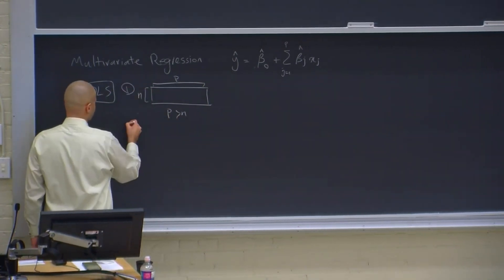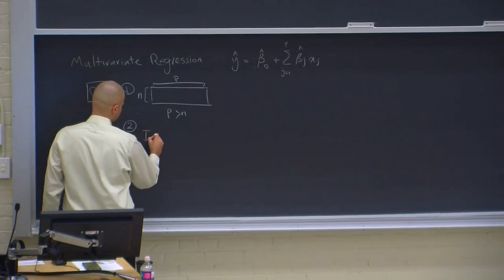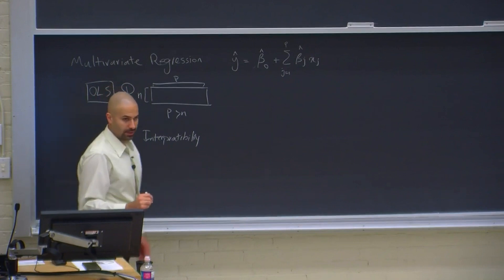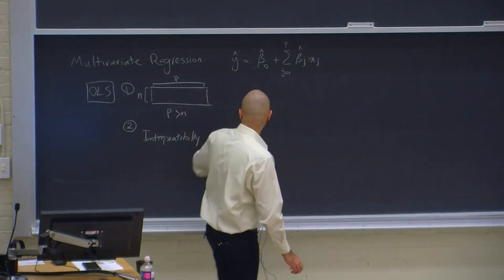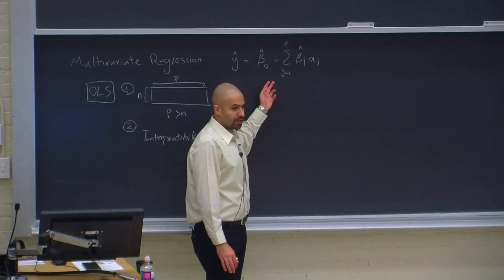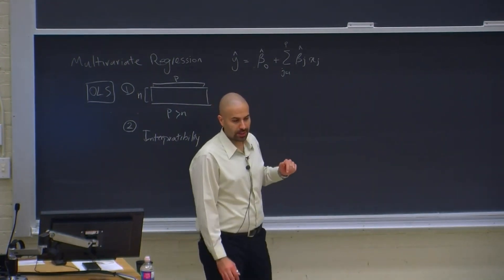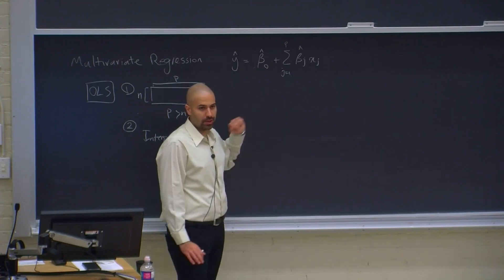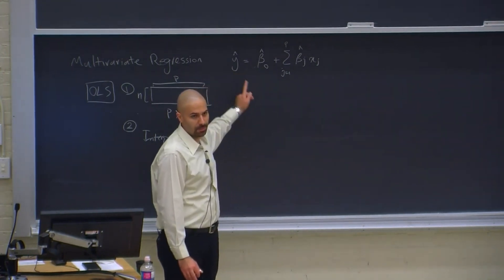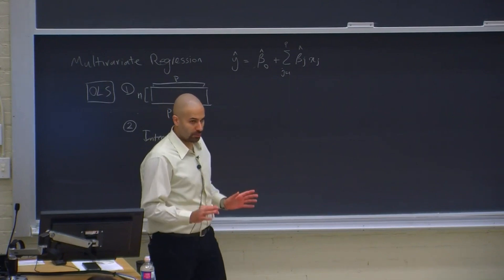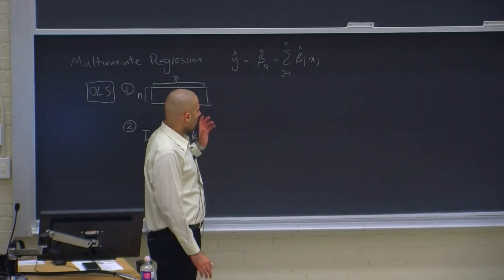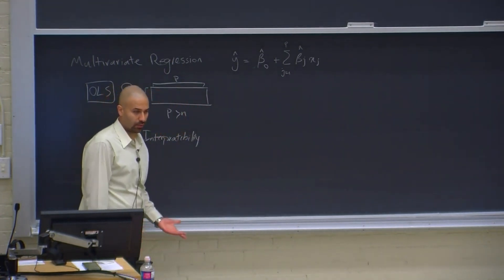The second problem is interpretability. In situations where the number of predictors is large, if you use multivariate regression and there are a large number of predictors that get non-zero coefficients from ordinary least squares, it means they have some effect on the response. If you want to use this model not for prediction but for understanding how we can change the response, then a model with many predictors is not useful.